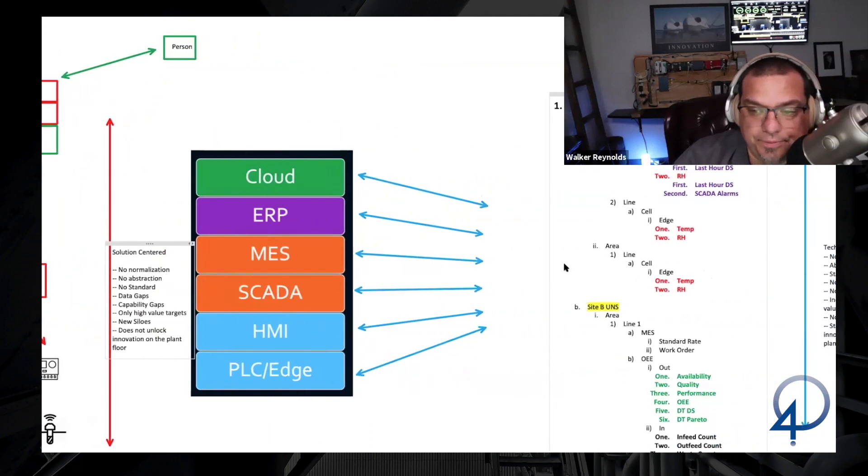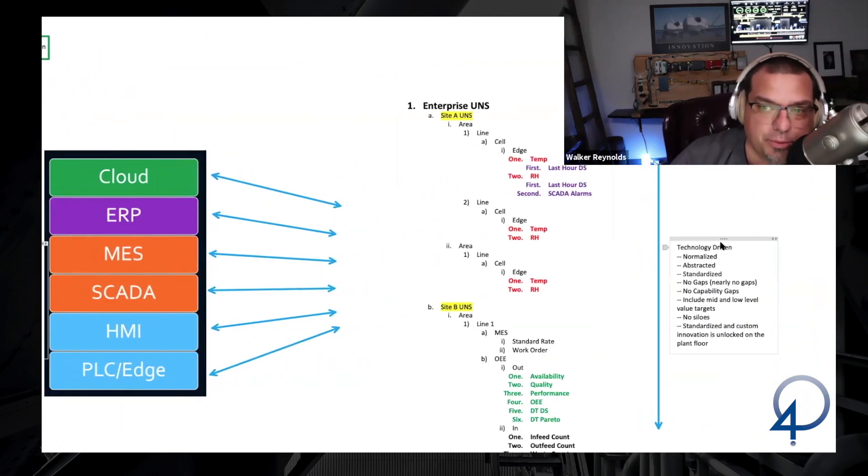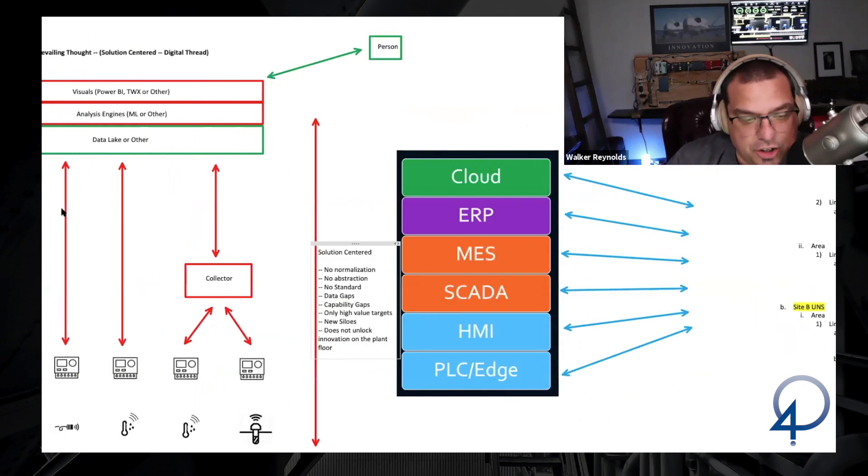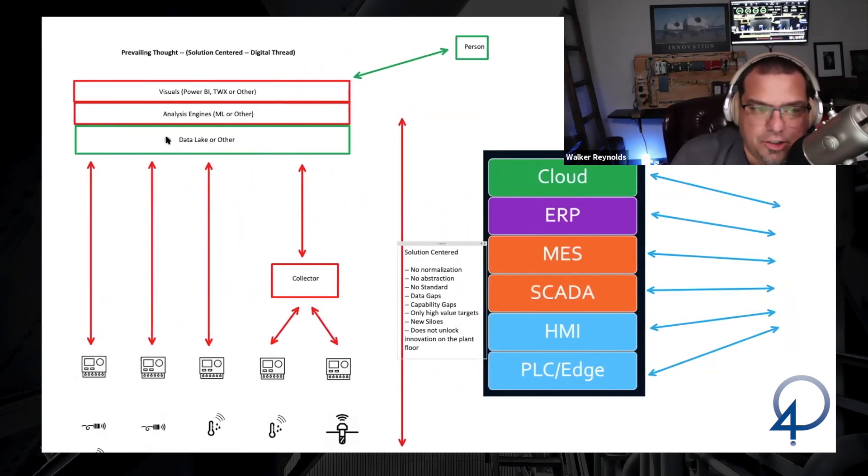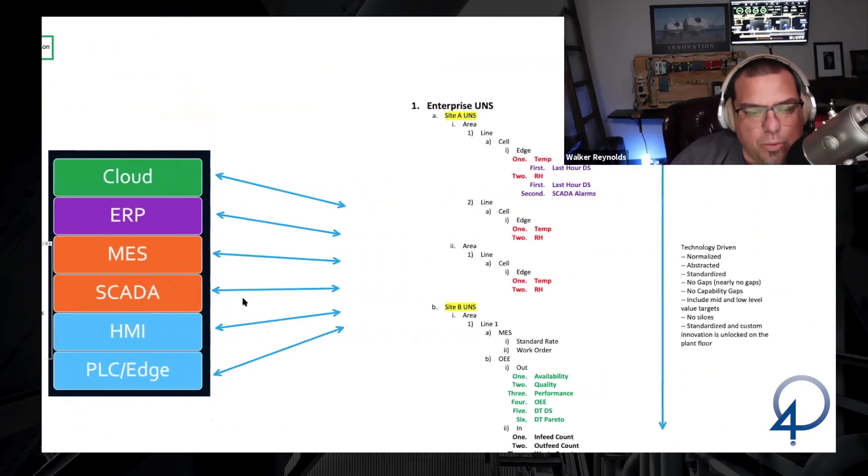This is what we do. So what we're talking about is the technology-driven approach. This is what we teach to everyone. Instead of taking a digital thread from the edge and discretely mapping it into a data lake and making assumptions about how the data will be consumed and then unlocking that data, instead of taking this approach, what we do is we treat every layer of the business as a node in an ecosystem. And we use a unified namespace in order to make sure that we have no gaps.